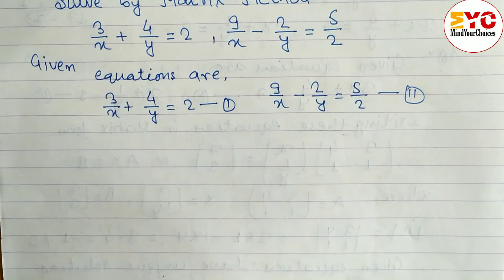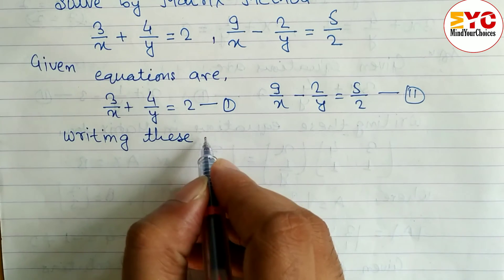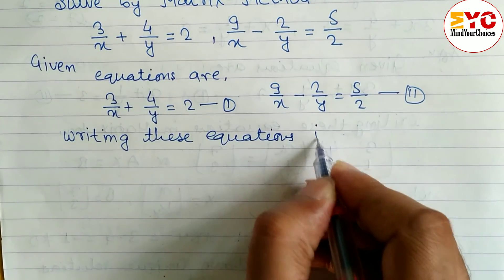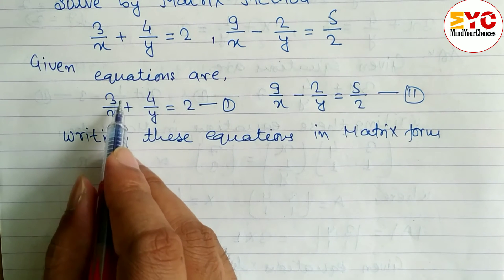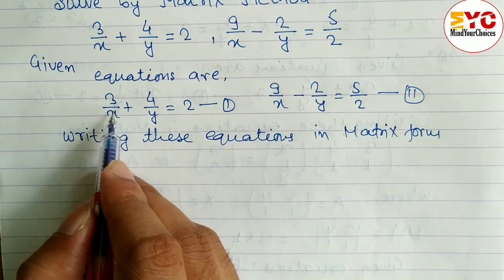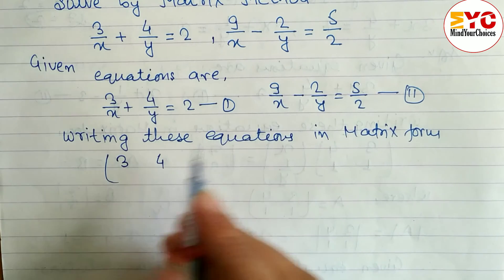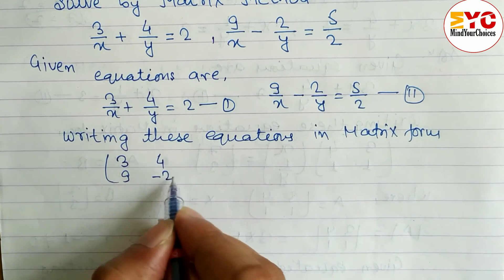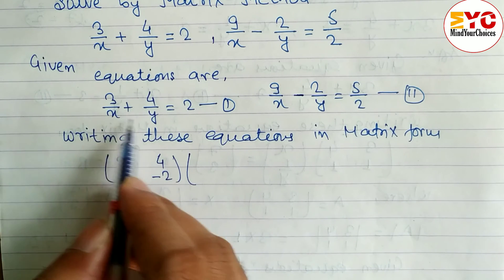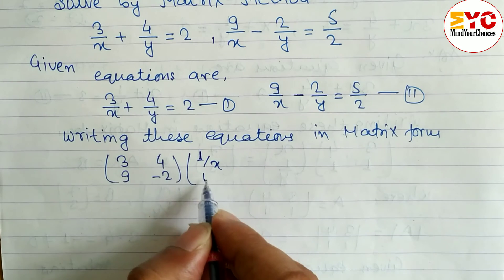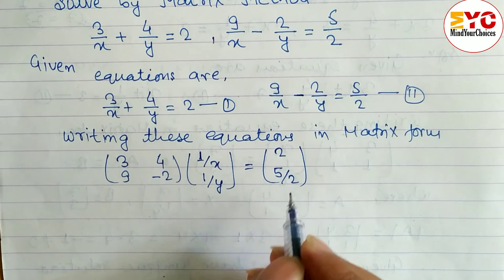This question is a little bit different from before. When writing these equations in matrix form, we treat the terms as coefficients of 1/x and 1/y — not x and y — because x and y are in the denominator. The coefficient of 1/x is 3, the coefficient of 1/y is 4, then 9, and minus 2 (we keep the minus sign). The variable column is written as 1/x and 1/y, and the constants are 2 and 5/2.